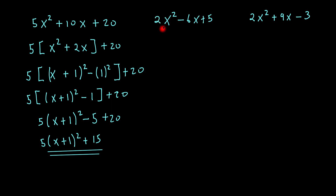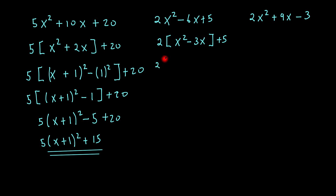Let's look at this one. Once again, we do the same thing — I can factor out the 2. You always factor out what's in front of the x squared term. So we factor out the 2, then we're left with x squared minus 3x plus 5. And then what we do is open the brackets inside and remember to square the brackets.